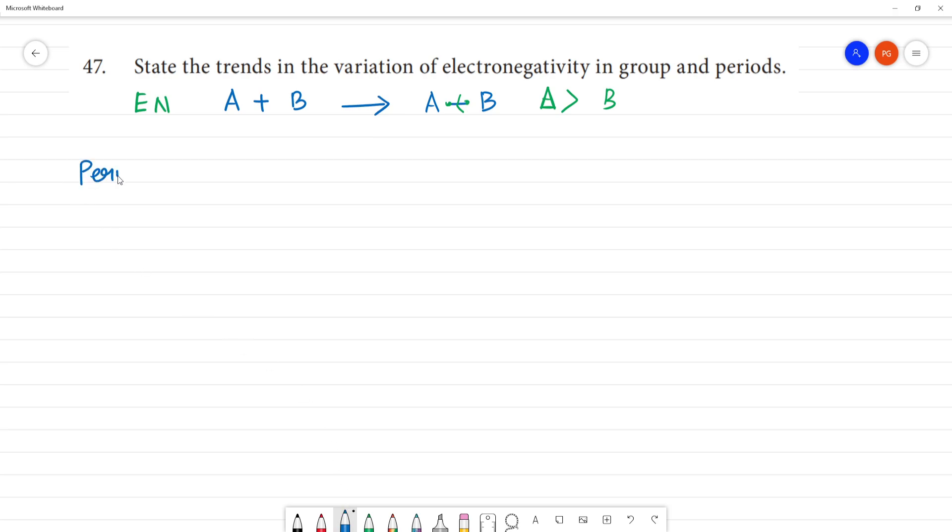So what happens along a period? And what happens along a group? In the period, what happens? Electronegativity values increase along a period.